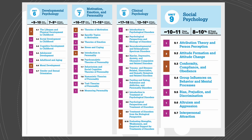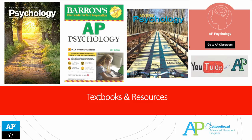The last unit is social psychology. We look at attribution theory, attitude formation, attitude change, conformity, compliance, and obedience, along with experiments and ethical considerations behind those studies. We examine group influences on behavior and mental processes, bias, prejudice, and discrimination. We also cover altruism, aggression, and interpersonal attraction — very interesting topics.